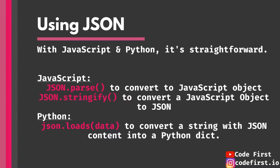Now that you know JSON syntax, that's literally it — everything else is just nesting and repeating the same things. Here's a JavaScript example: to convert JSON text into a JavaScript object so it can be manipulated, all you need is JSON.parse() with the JSON text variable inside the parentheses. From there it's pure JavaScript object manipulation. To go the other way — from a JavaScript object to JSON — you use JSON.stringify() on the object, and now you have JSON text.